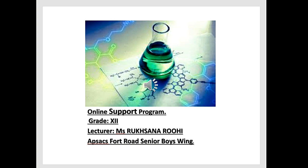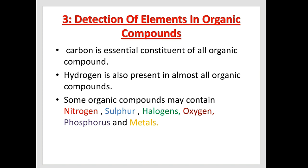Chapter number 15. Now we are going to continue it. In the last lecture we discussed two main topics: first, the allotropic form of carbon, i.e. buckyball, and second, homologous series. Now we will continue with detection of elements in organic compounds.